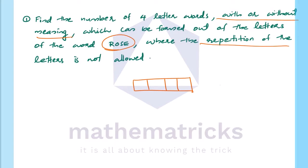In the first place, there are 4 possibilities. Now for the second place, we will select from the remaining letters R, S, E — that gives three possibilities.